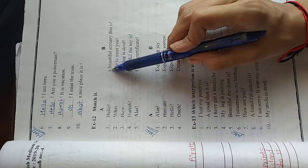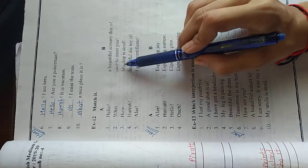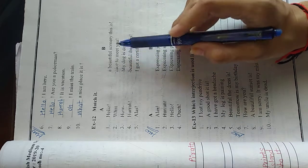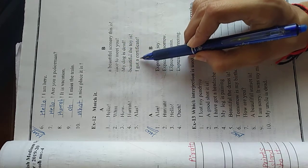Next B part. A beautiful scenery this is. Nice to meet you. My dog is dead. Beautiful the toy is. I got a certificate.